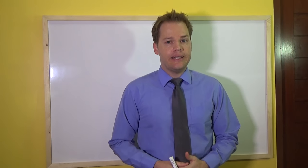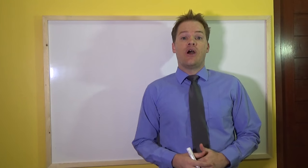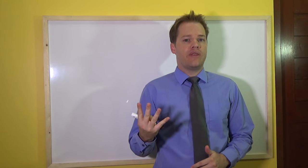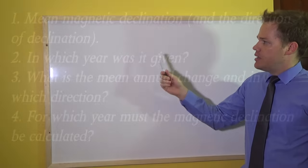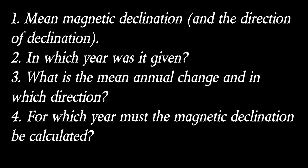In order to calculate the magnetic declination, you have to identify four very important things. First is the mean magnetic declination and in which direction this variation is. Second is in which year this magnetic declination was given. Third is what the mean annual change is and in which direction. The last thing is for which year the magnetic declination must be calculated.